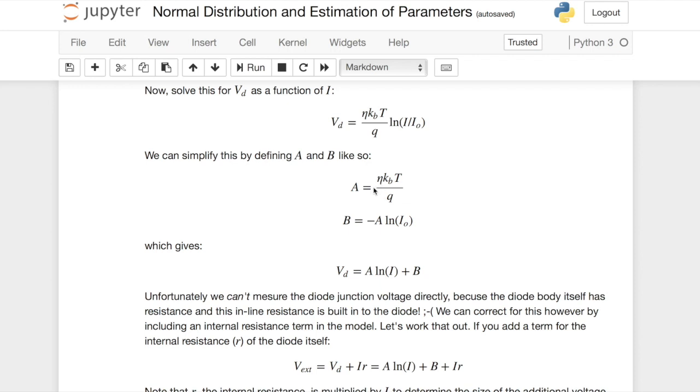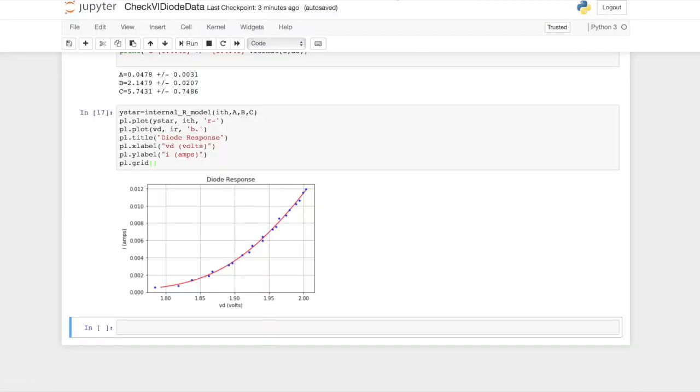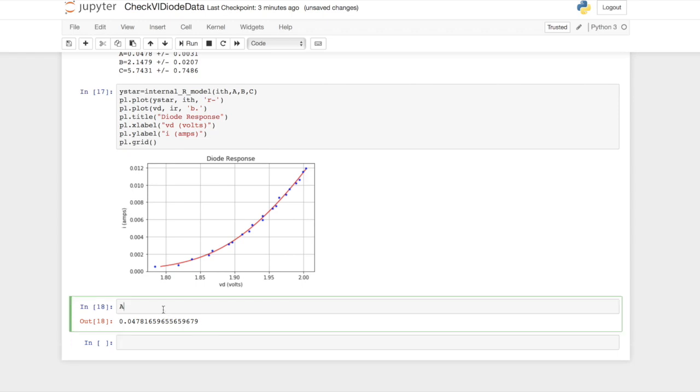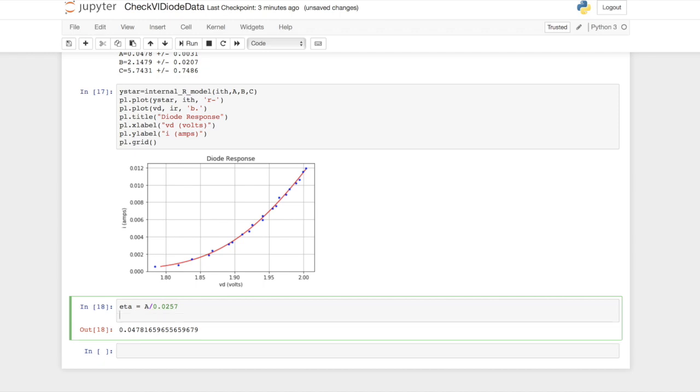So let's pop back over here. It looks like eta is going to be A divided by a 40th of a volt. So I should be able to, if I can just show A here, so I can just say eta is going to be A divided by, I think the actual number is 0.0257 volts. So eta is about 1.86 in my data.